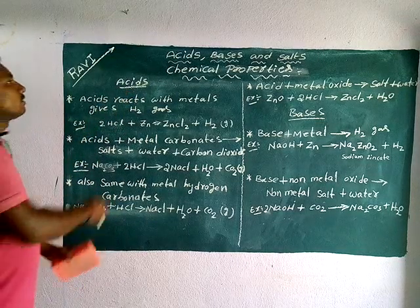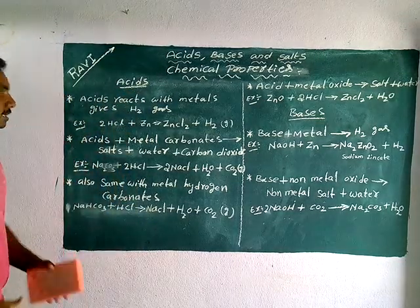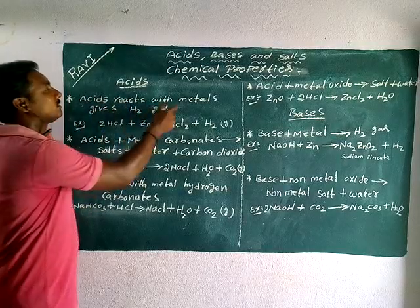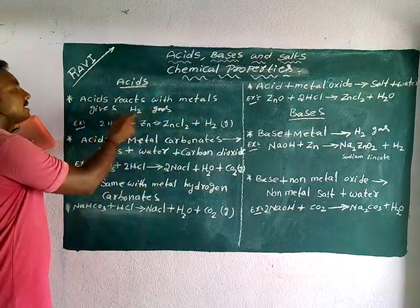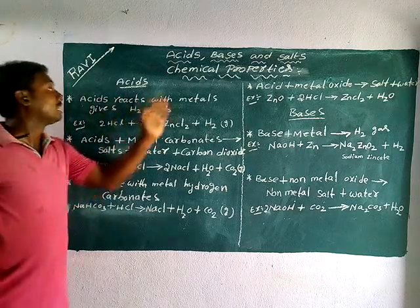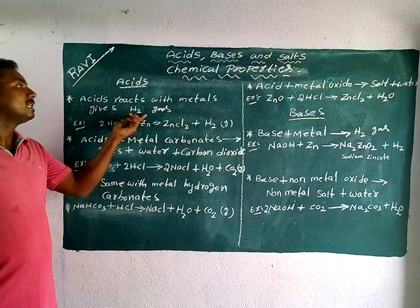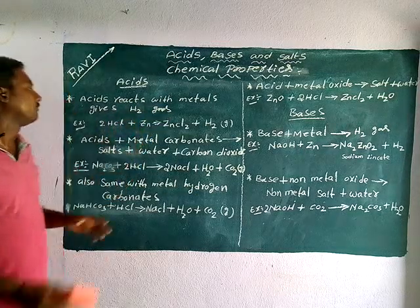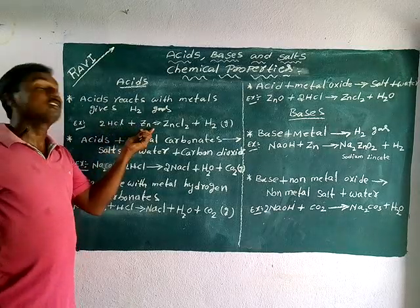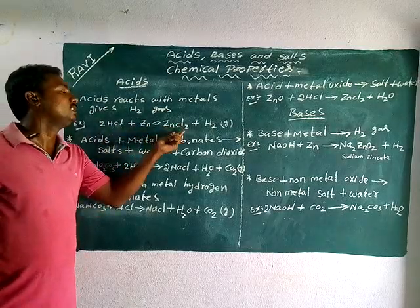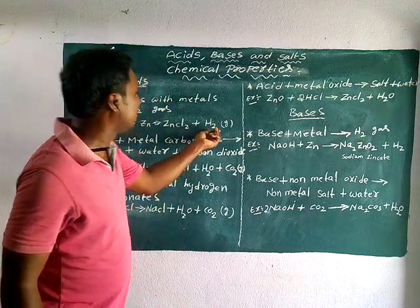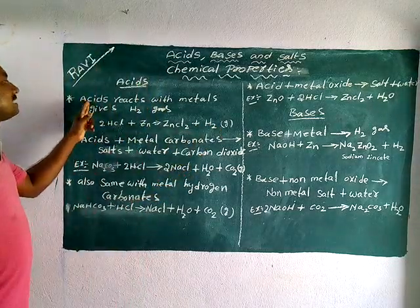First, chemical property of acids: acids react with metals and give hydrogen gas. For example, hydrochloric acid and zinc metal react to give zinc chloride and hydrogen gas.